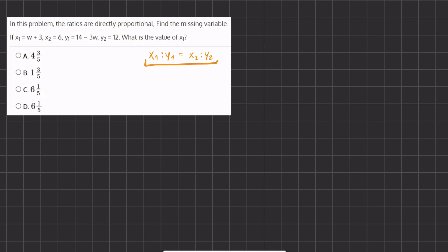Let's do so and plug in our expressions. So we have x1, which is w plus 3, divided by y1, which is 14 minus 3w, equals x2, which is 6, divided by y2, which is 12.